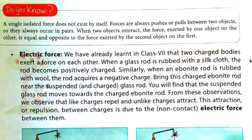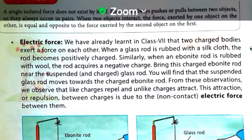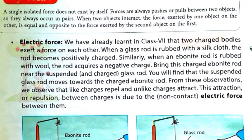A single isolated force doesn't exist. As you know, when we break a magnet, there are always two poles — north and south. Similarly, force doesn't exist in a single form; it always exists in a pair. Forces are always pushes or pulls between two objects, so they always occur in pairs.